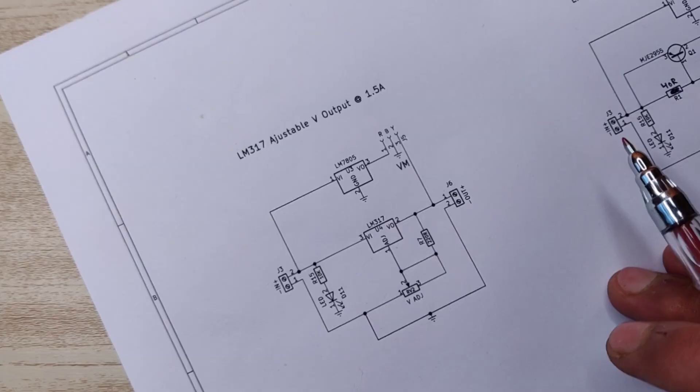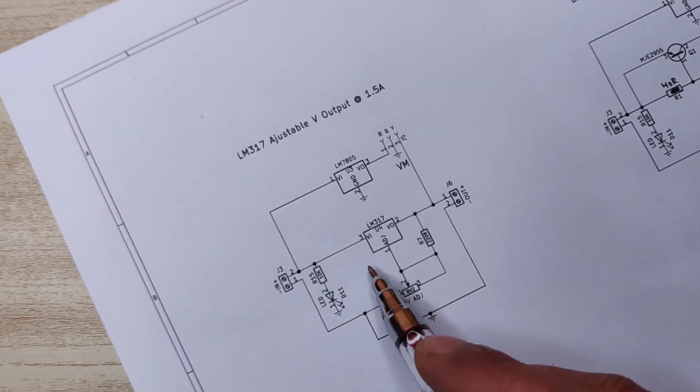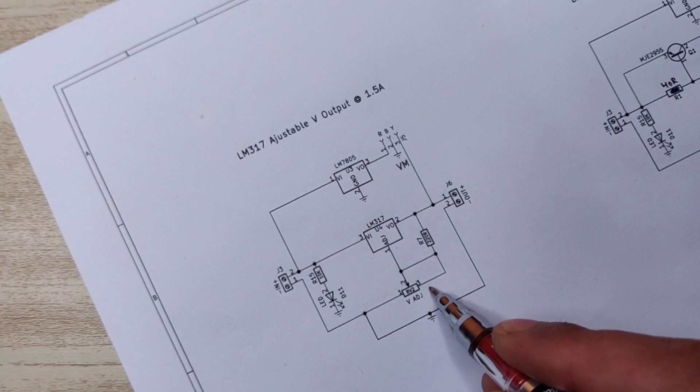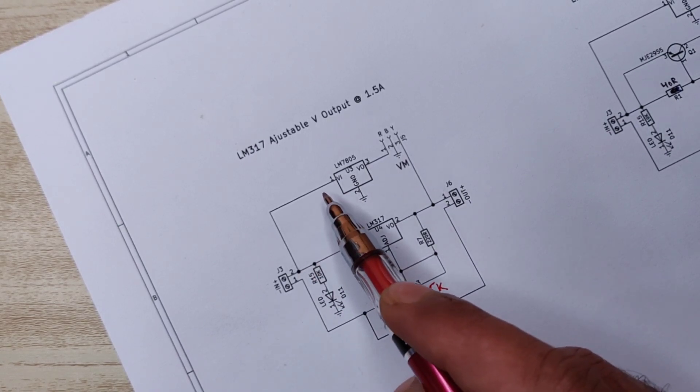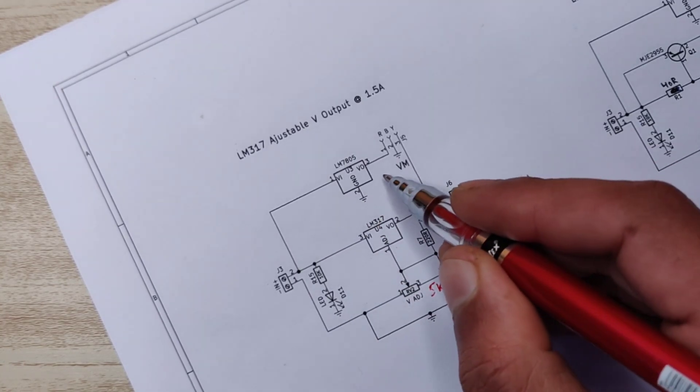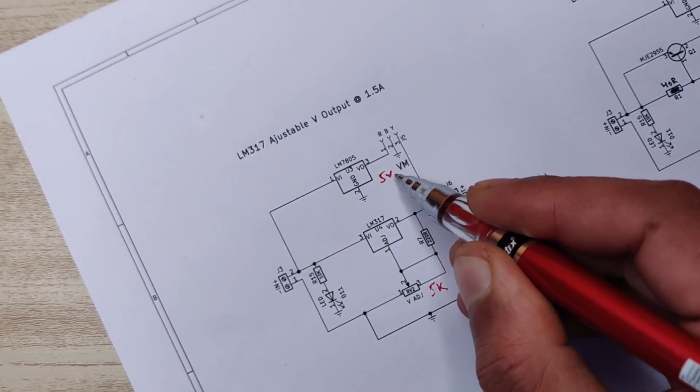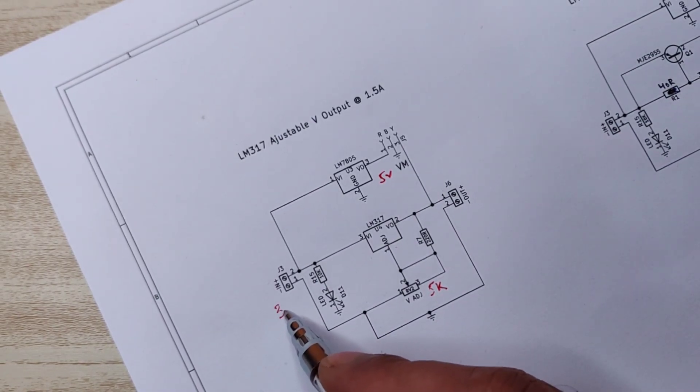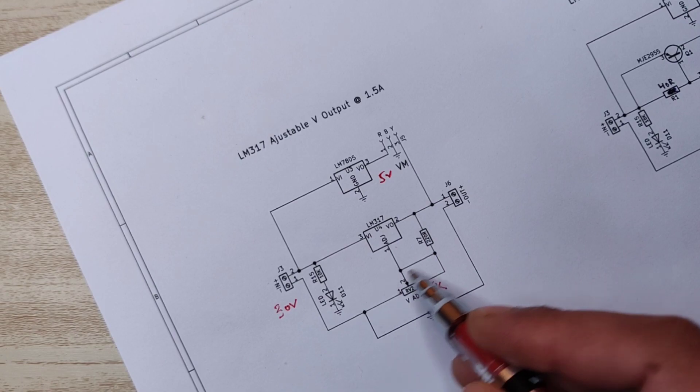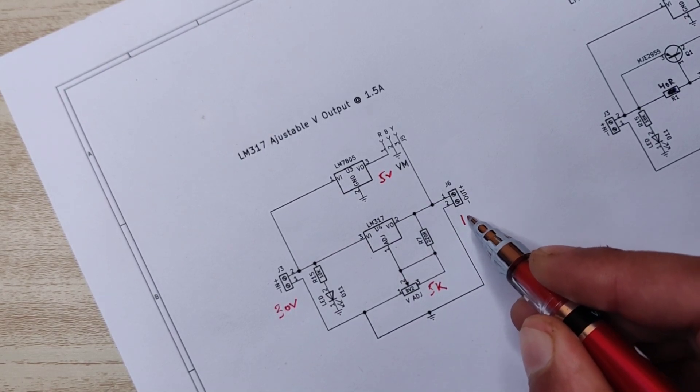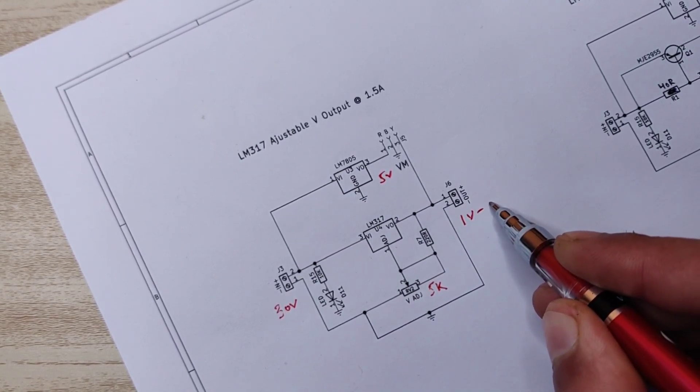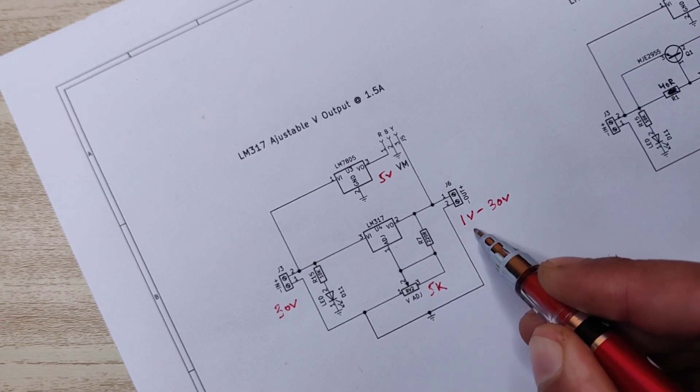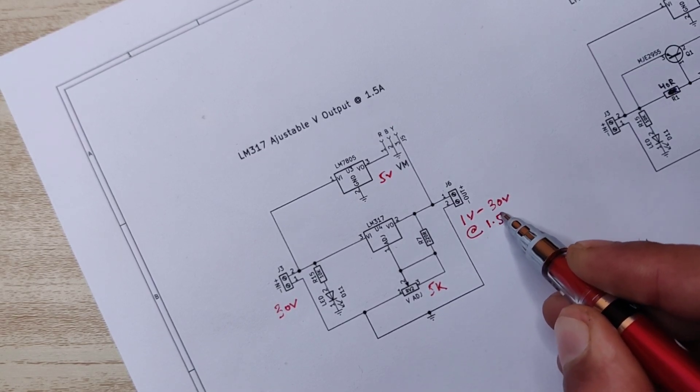In the first diagram we simply have an LM317 adjustable regulator with 5 kilohm potentiometer. I have also used another LM7805 to provide fixed 5 volts to the voltmeter. Input supply can be used up to 30 volts and output you can adjust from 1 to 30 volts with 1.5 ampere output as per datasheet of LM317.